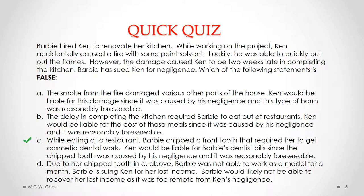D is also a true statement and therefore not the correct answer. It says due to her chipped tooth in C above, Barbie was not able to work as a model for a month, and Barbie is suing Ken for her lost income. Barbie would likely not be able to recover her lost income as it was too remote from Ken's negligence. The loss of the modelling income is too remote — it's not reasonably foreseeable from Ken's negligence in causing the fire.